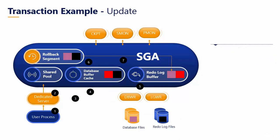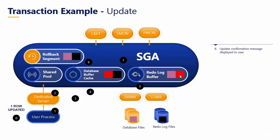In the seventh step, changes to the rollback segment are recorded in the redo log buffer. And then in the eighth step, the user will get a message saying the update has been successfully completed.